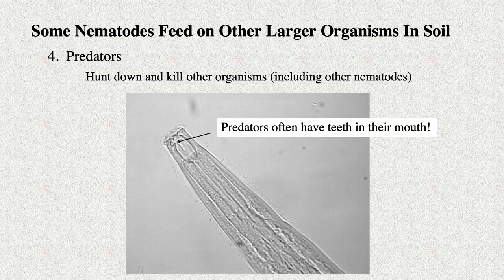Nematodes can also be predators specialized for feeding on other small animals. This nematode has a specialized mouth with sharp teeth that it uses to shred prey when they are ingested. It also feeds on other nematode species in the environment, bringing nematodes into its body for digestion, similar to how a snake ingests its prey.